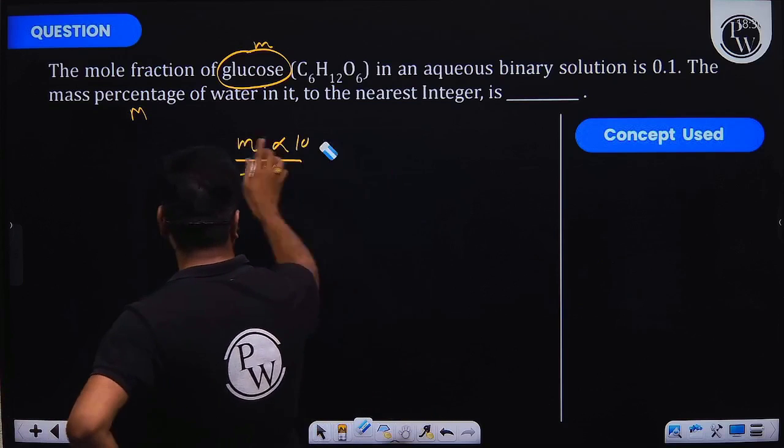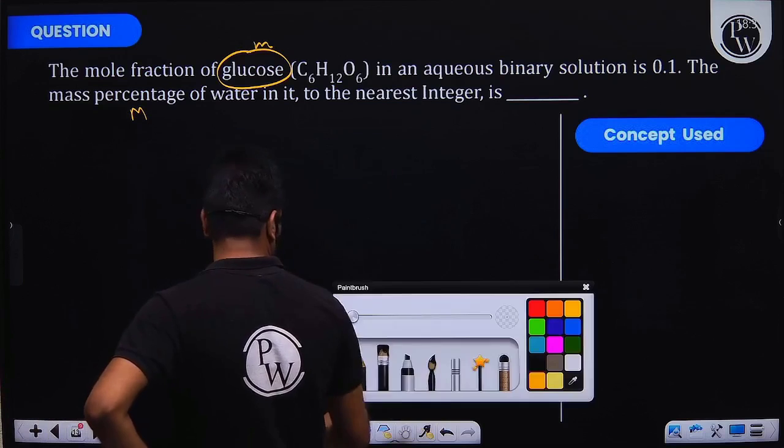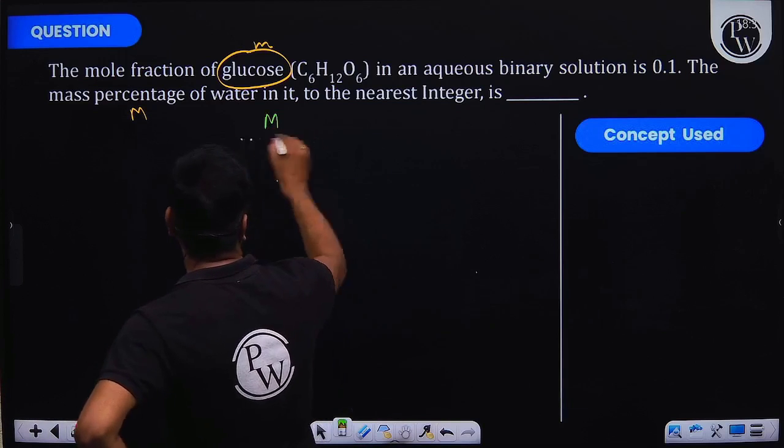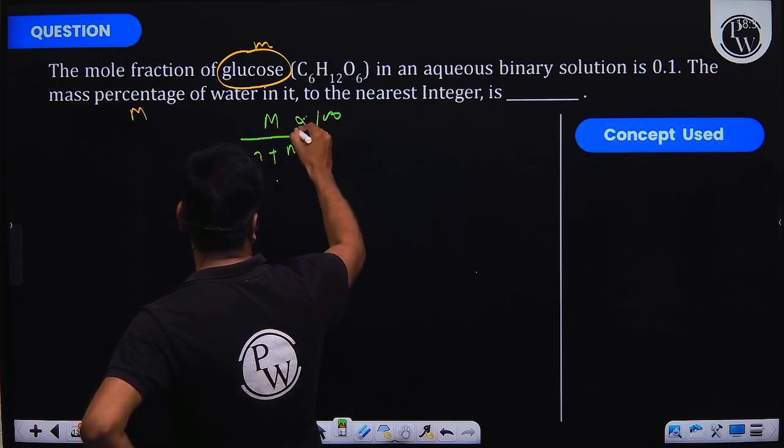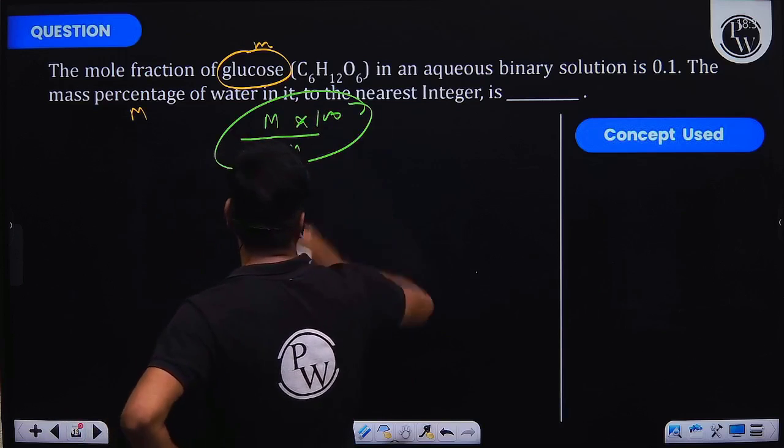But we are supposed to find the mass percentage of water, so what we will do is capital M divided by small m plus capital M times 100. We are supposed to find the value of this expression, which would give us the mass percentage of water.